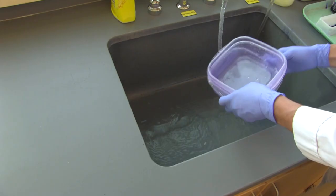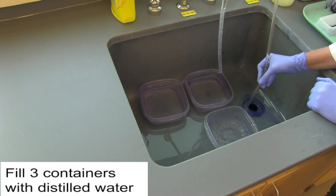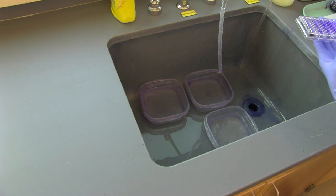After the last wells have been filled with crystal violet, let the plate rest for at least one minute. While the cells are staining, fill three containers with distilled water. This will be used to wash out the excess crystal violet.